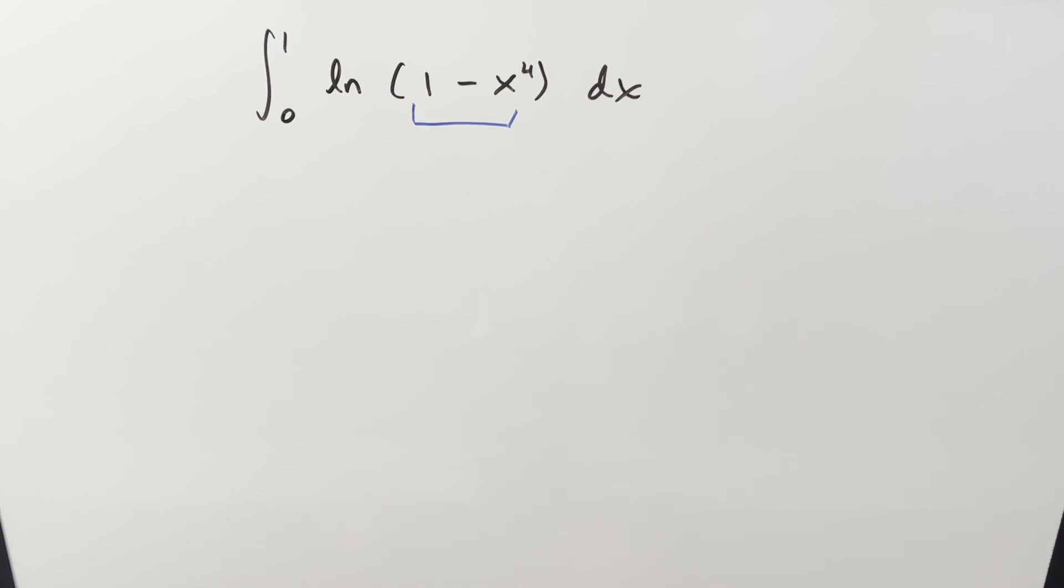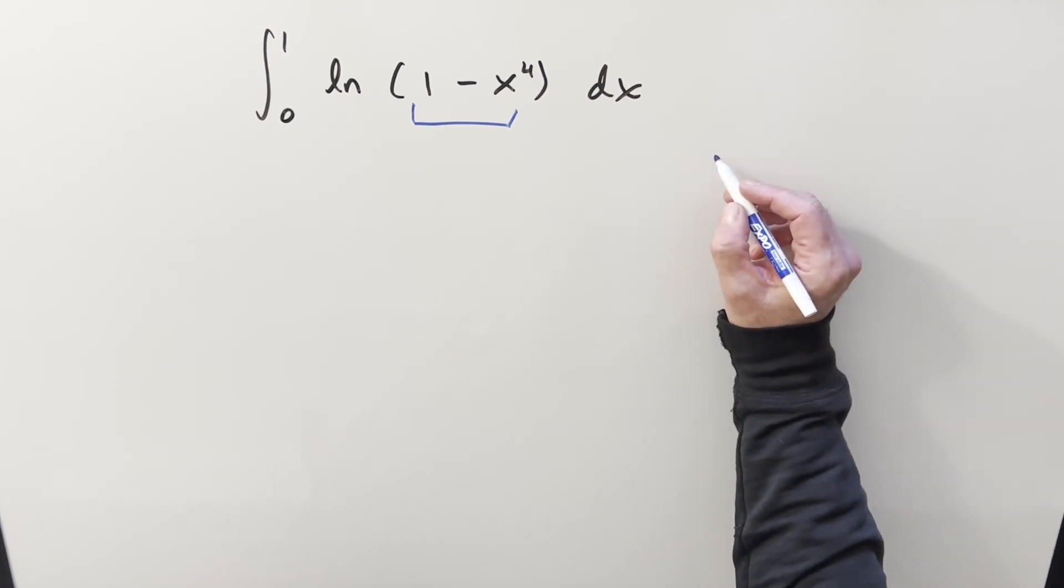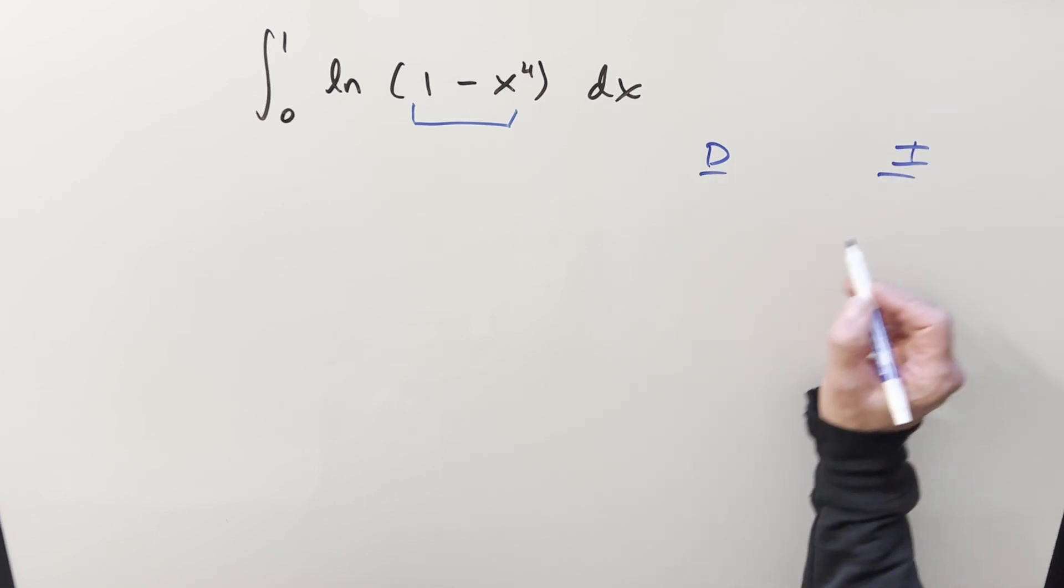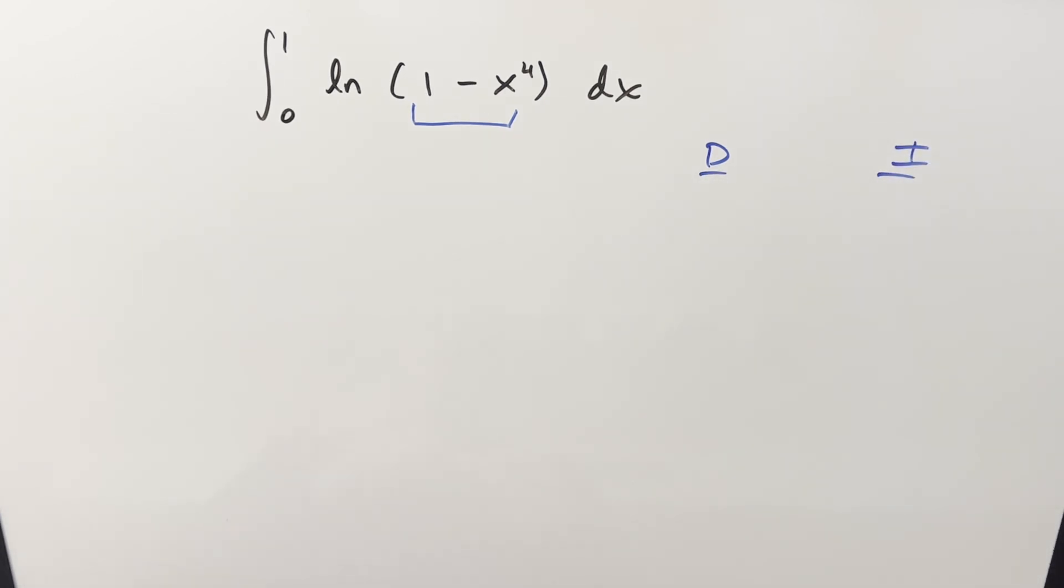For some reason I was feeling pretty lazy on this one and I kind of wanted the integral to just do itself. But I did find a way to avoid just doing integration by parts straight away. So maybe I found a slight improvement, maybe like a less worse method. If you've got a better way in the comments, please let me know.